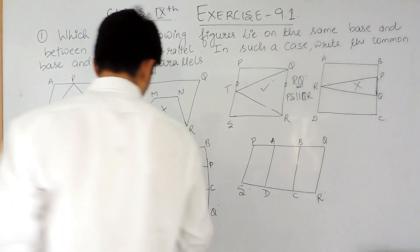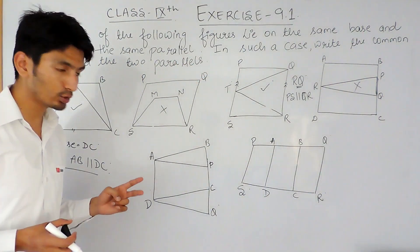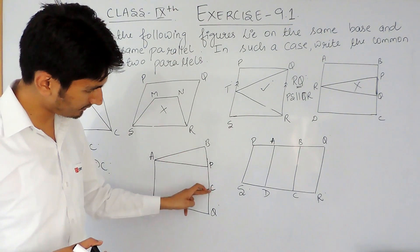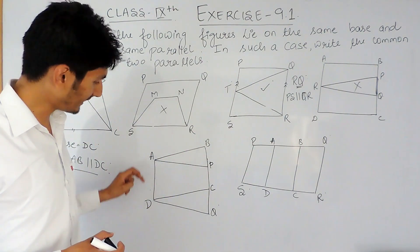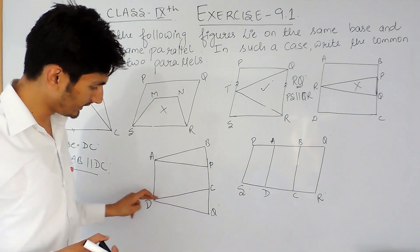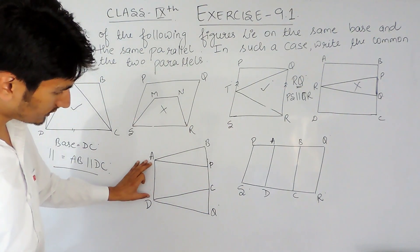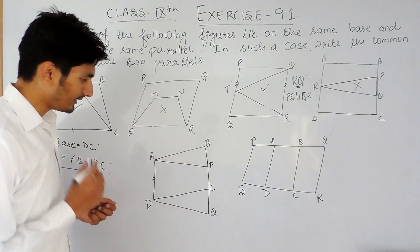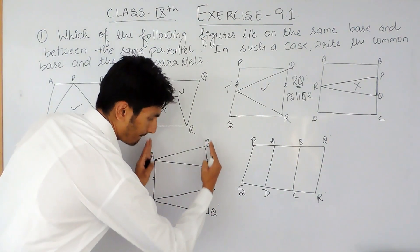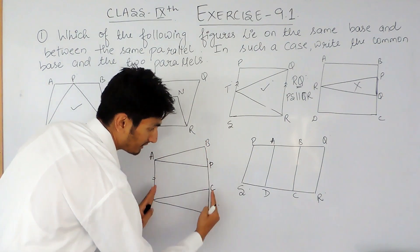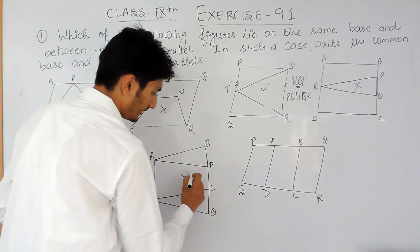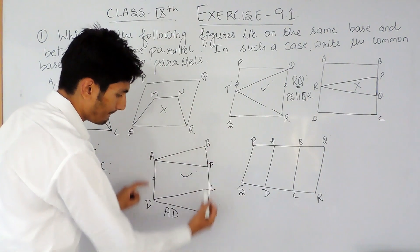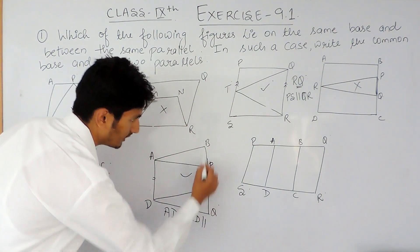Looking at this figure, again there are two figures — two parallelograms. The first one is ABCD and the second is APQD. Both parallelograms have the same base, that is AD. And they lie between the same parallels. They are touching the same parallel lines. So this is correct. The base is AD and both figures lie between the same parallels, where AD is parallel to BQ.